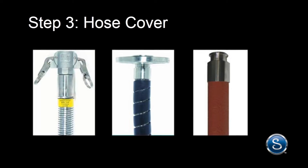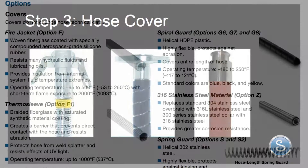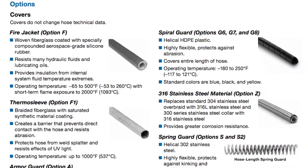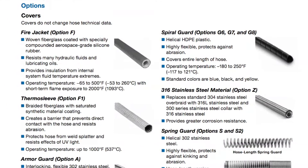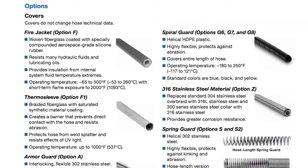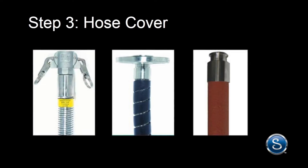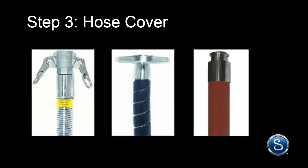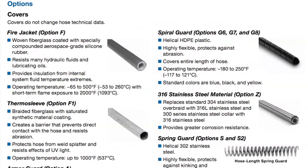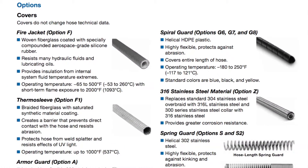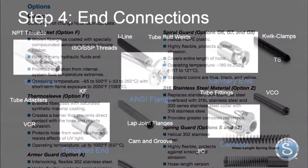Step three: select the hose cover. The hose cover protects against permeation, abrasion, kinking, and temperature, and it can enhance UV resistance and flexibility. These options may be integral to the hose or an added accessory. Common cover options include armor guard, spiral guard, fire jacket, thermosleeve, silicone, and stainless steel overbraid.